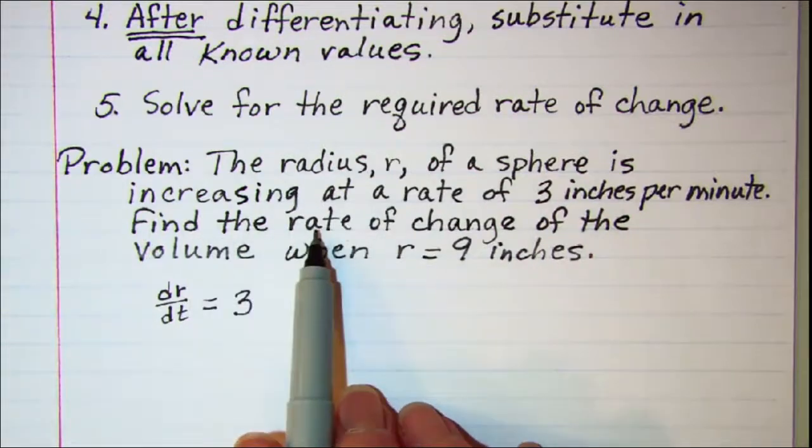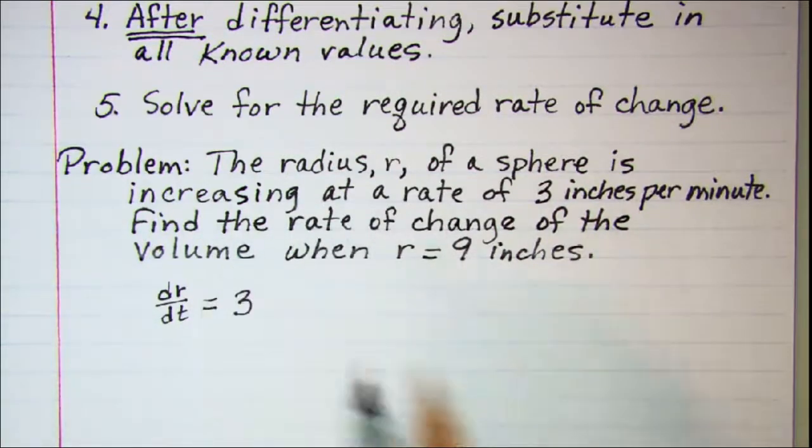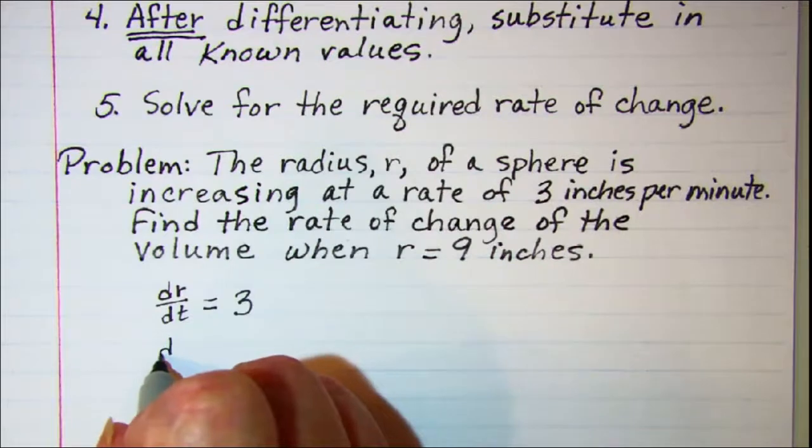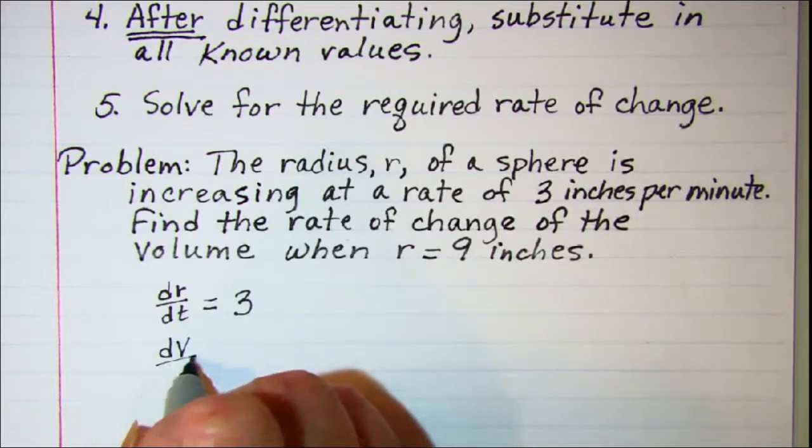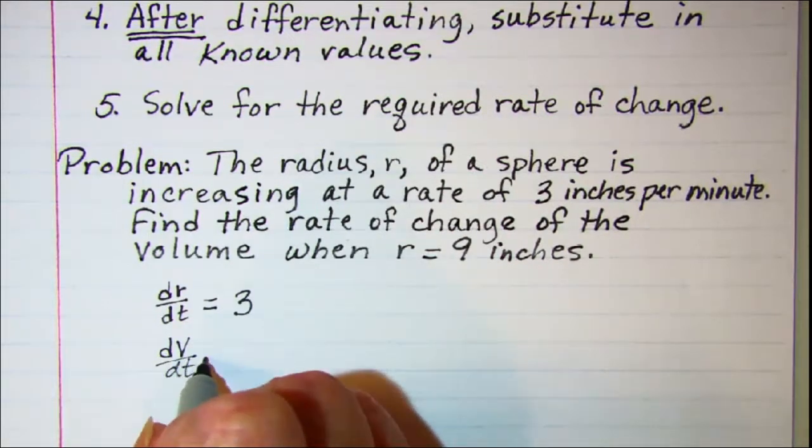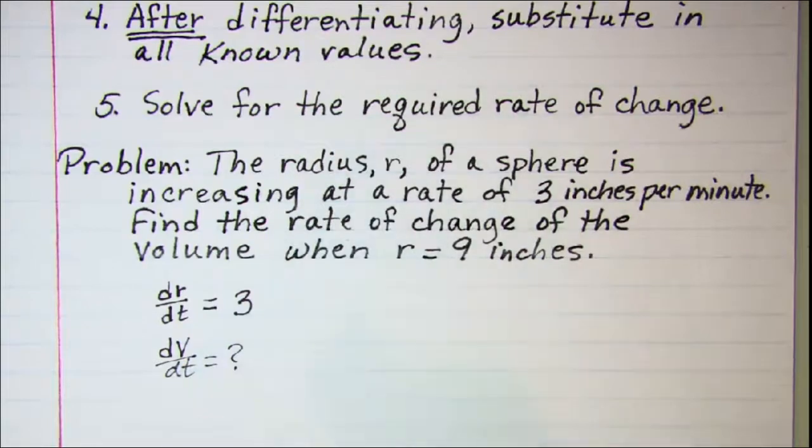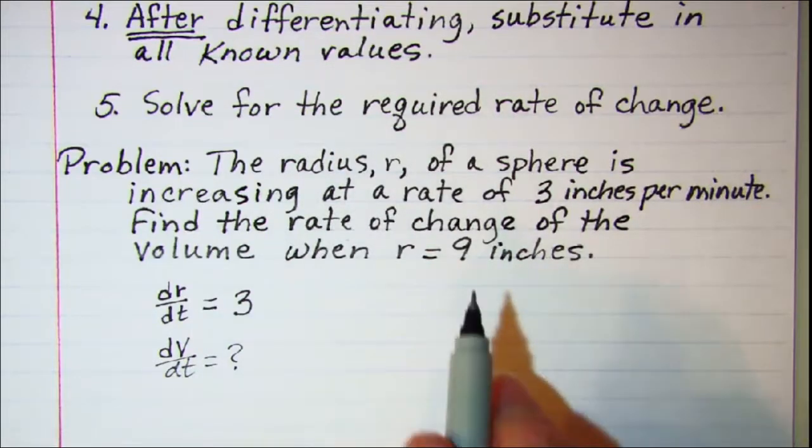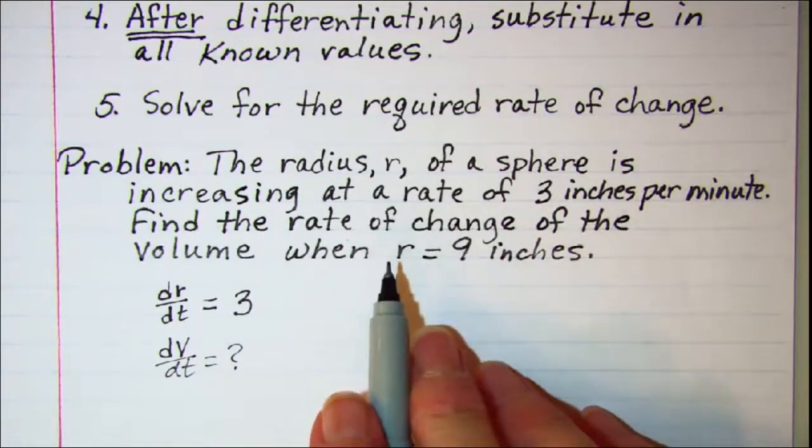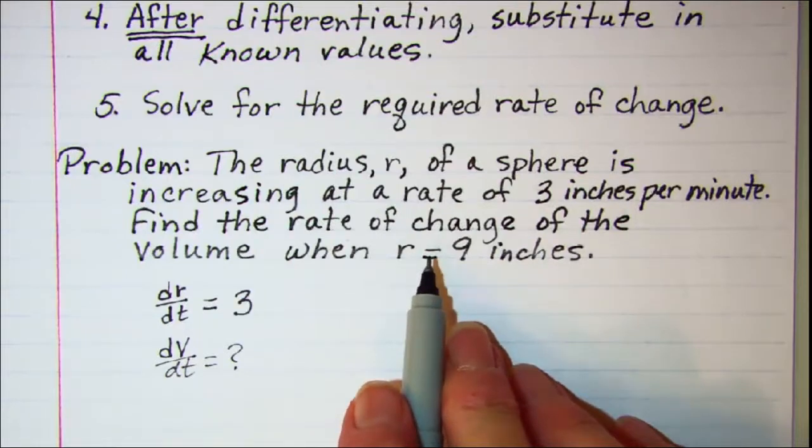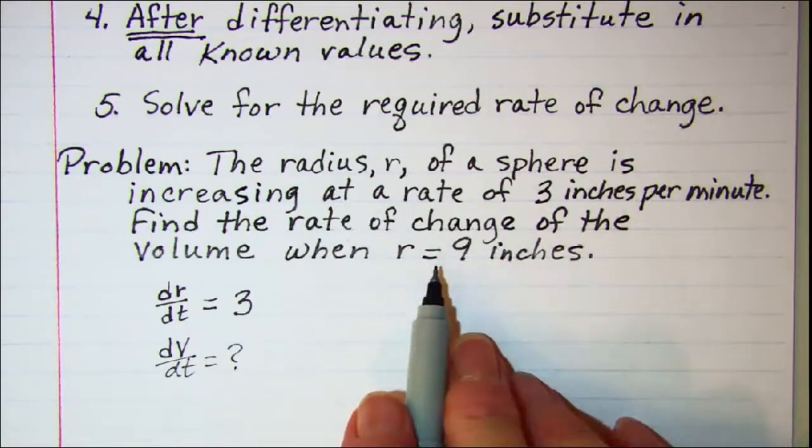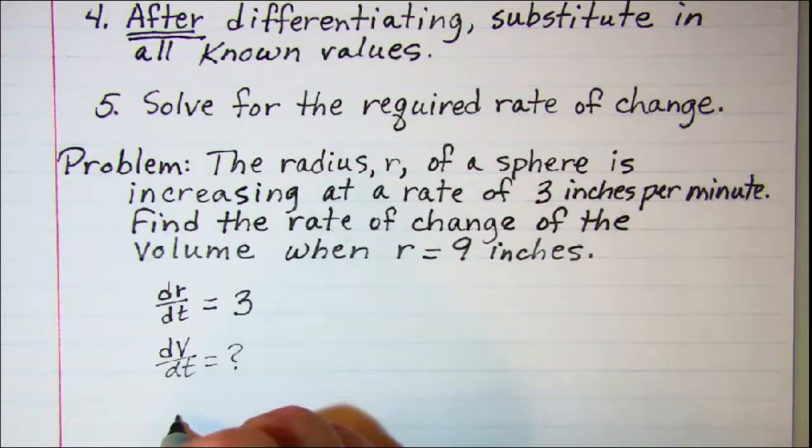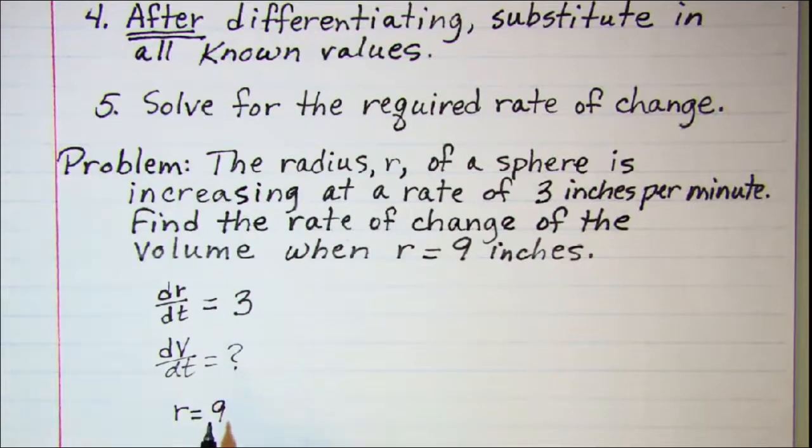We're looking for the rate of change of volume, so we're looking for dV/dt. And then we're told that we want the rate of change of volume when the radius is 9. So the radius is 9, but we can't put that in until after we differentiate our equation.